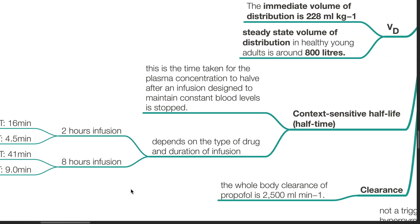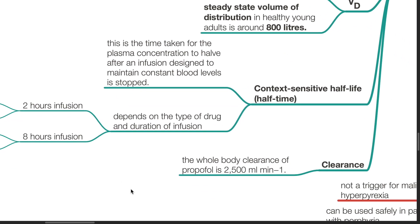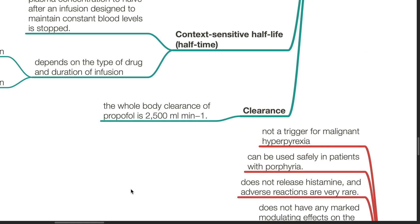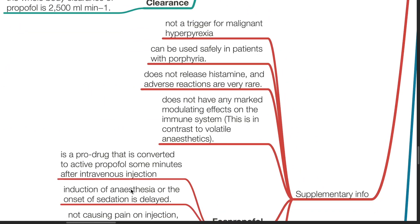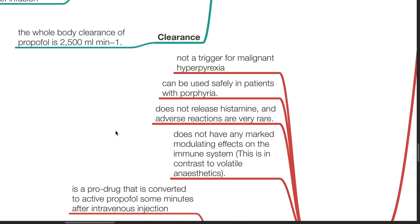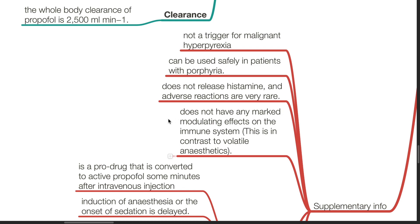The whole body clearance of propofol is 2.5 liters per minute. Additional information: Propofol is not a trigger for malignant hyperpyrexia and can be used safely in patients with porphyria. It does not release histamine, adverse reactions are very rare, and it does not have any marked modulating effects on the immune system.